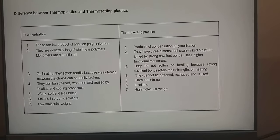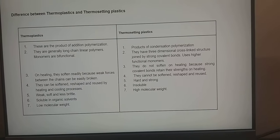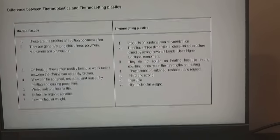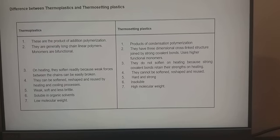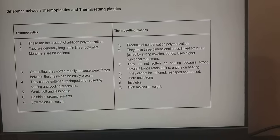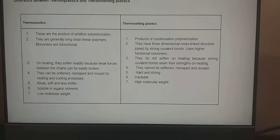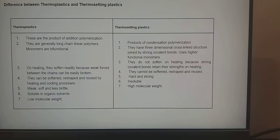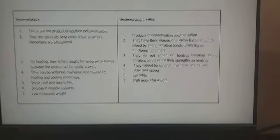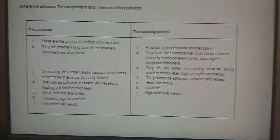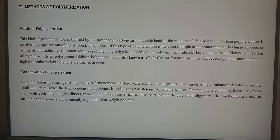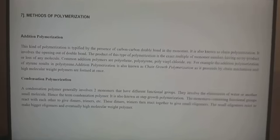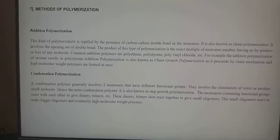Thermoplastics are weak, soft, and less brittle, whereas thermosettings are hard, strong, and brittle. Thermoplastics are soluble in organic solvents, while thermosettings are insoluble. Thermoplastics are low molecular weight polymers, whereas thermosettings are high molecular weight substances. Regarding the method of polymerization, thermoplastics are formed by addition polymerization and thermosettings by condensation polymerization.